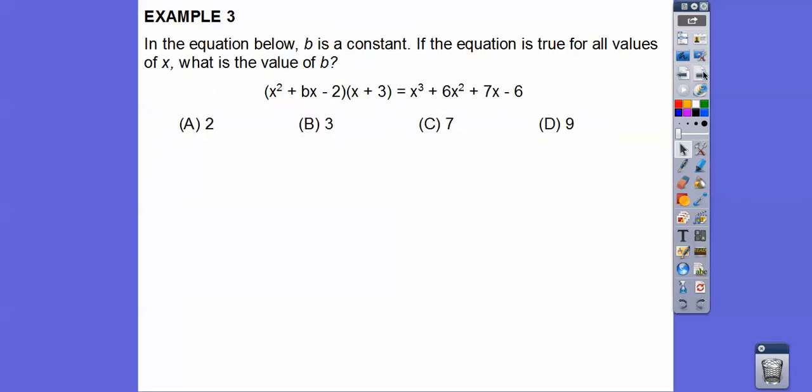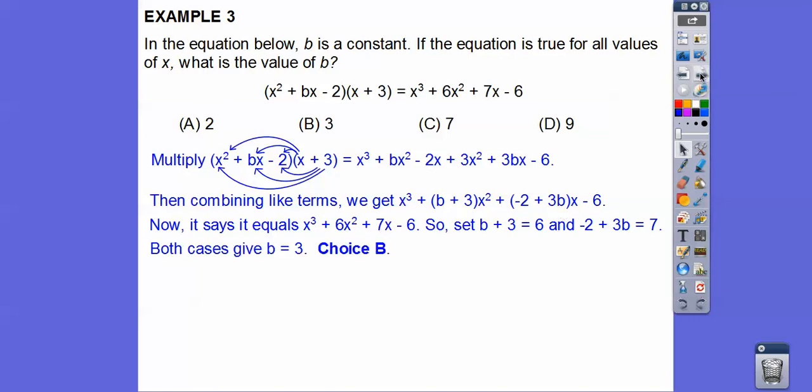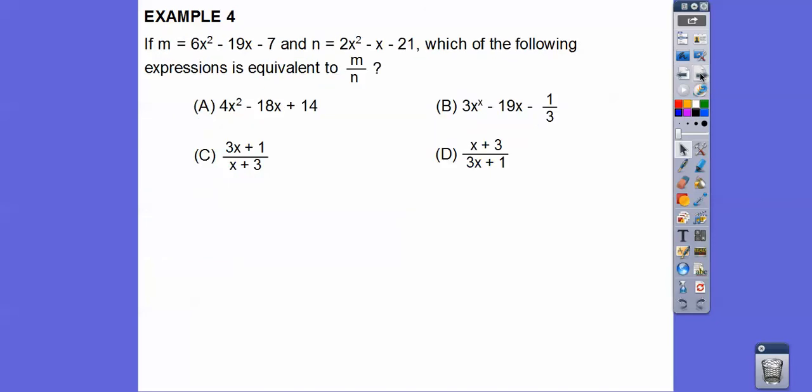All right. So if the equation below, b is a constant right there. So we're going to foil that mess out on the left or multiply it out. If the equation is true for all values of x, what is b? So let's multiply it out. We get that. And let's combine like terms with the x squareds and the x's. So we have a b plus a 3 for the x squareds. And we have a negative 2 plus a 3b for the x's right there. So remember, this stuff equals this side right there. So that means, you guys, that the b plus 3 must equal the 6 because that's what's in front of the x squareds. And the 7 is in front of the x. So that must mean 7 equals that. All right. So both equations give us b equals 3 right there. So choice b.